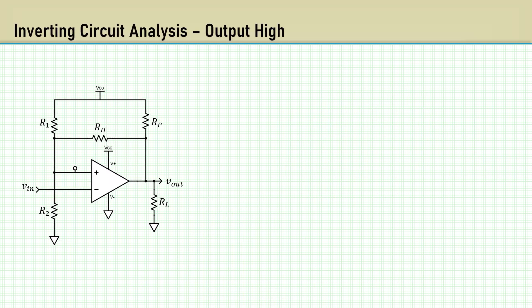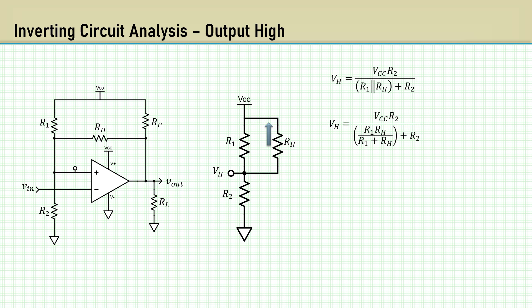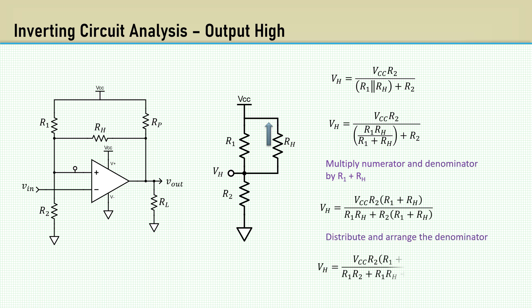Let's roll through the circuit analysis for the inverting configuration. When the output is high, RH is connected to VCC, so VH is the voltage divider with the parallel combination of RH and R1 with VH across R2. Eliminate the fraction by multiplying by R1 plus RH, then distribute and arrange.